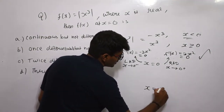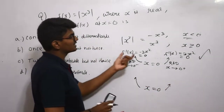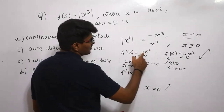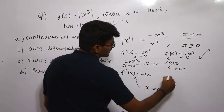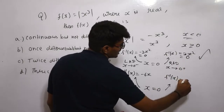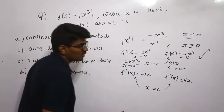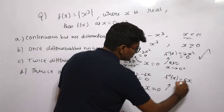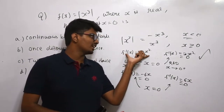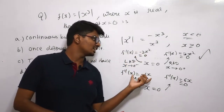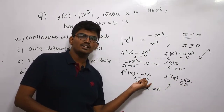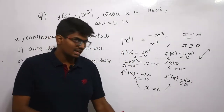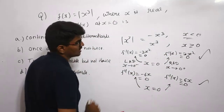Let us check the second derivative. Differentiating again: f''(x) = −6x on the left side and f''(x) = 6x on the right side. Substituting x = 0 in both gives 0. Since the left and right second derivatives are equal at x = 0, the function is also differentiable a second time.